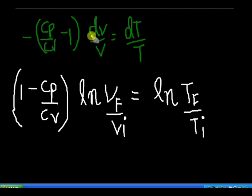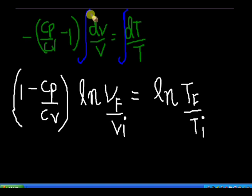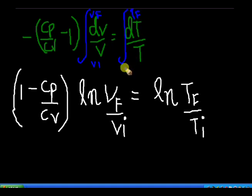By substituting it, we form a new relation: (Cp/Cv minus 1) times dV/V equal to dT/T. I am going to integrate this equation as it involves infinitesimally small values. As (Cp/Cv minus 1) is a constant, we are not going to integrate that. Applying limits: V from Vi to Vf, and T from Ti to Tf.